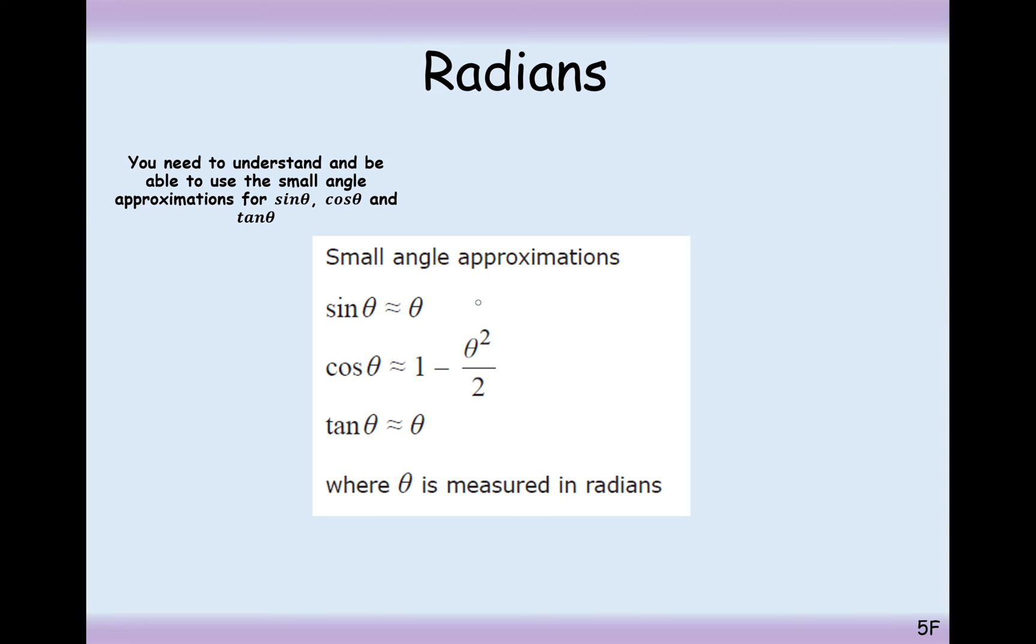We get these small angle approximations in our formula booklet, so you don't need to memorise them. But sine and tan are just straightforward theta values, but cos is the weird one, 1 minus theta squared over 2.